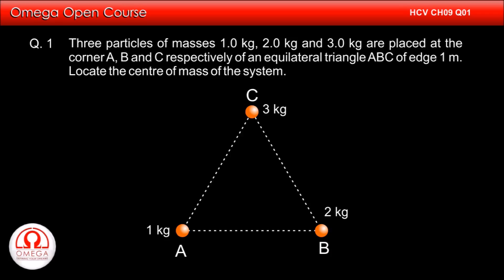Three particles of masses 1 kg, 2 kg and 3 kg are placed at the corners A, B and C respectively of an equilateral triangle of edge 1 meter. Locate the center of mass of the system.